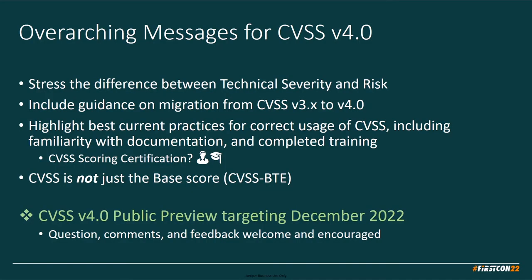We also have overarching messages. CVSS provides technical severity — we do not imply or infer risk. After enough NVD lookups finding V2 and V3 scores for everything, you really don't want three scores now, so we'll provide guidance on migrating from three to four — it's less of a step change than two to three. And we're giving more importance to education. It's quite important to get CVSS right; authoritative scores accurate and aligned with NVD matter, and training is part of the solution.